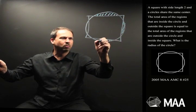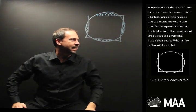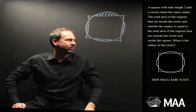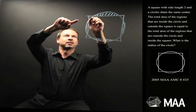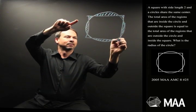This one, this one, this one. All right, that total area is equal to the total area of the regions that are outside the circle and inside the square. Outside the circle and inside the square are these ones. I'll just draw dots.